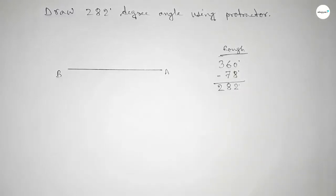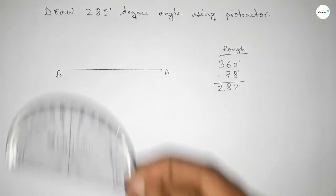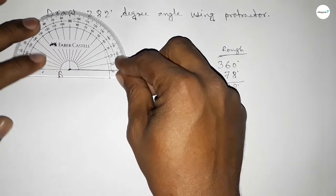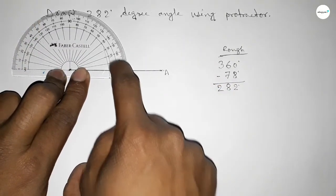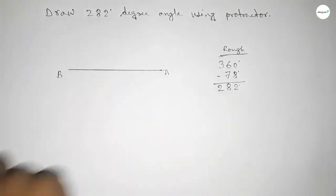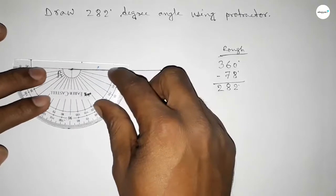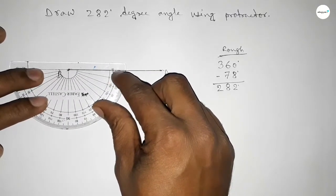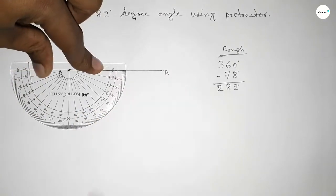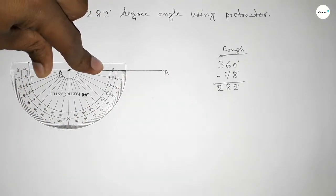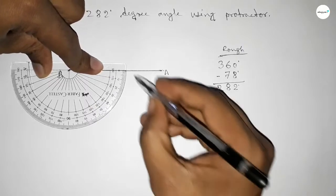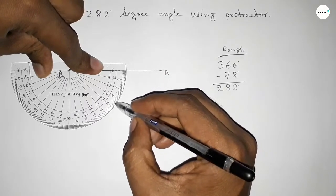So first, we have to count a 360-degree angle on point B. Putting the protractor on point B first and counting the angle from 0 to 180 degrees, then repositioning the protractor on point B and counting the total angle, so total 360 degrees. Now counting 78-degree angle: 10, 20, 30, 40, 50, 60, 70, 75, 76, 77, 78. So this is 78 degrees.